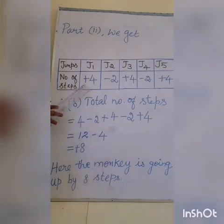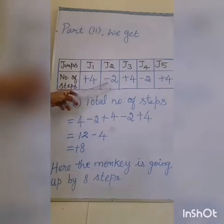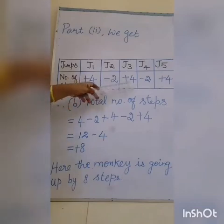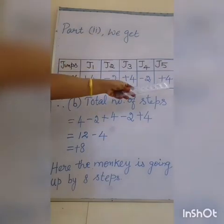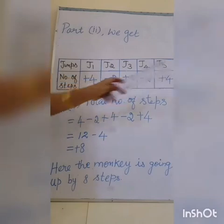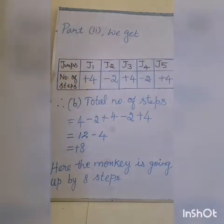First the monkey does 4 steps up in the second part question. So we put plus 4. And 2 steps back, that means 2 steps down, so minus 2. 4 steps up, so plus 4. 2 steps back, 2 steps down, so minus 2. Again 4 steps up, so plus 4. Do you understand this table?